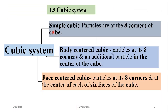In the cubic system, three types of unit cells exist: simple cubic, body centered cubic, and face centered cubic. In simple cubic, particles are at the eight corners. In body centered cubic, particles are at eight corners plus one particle at the center of the cube. In face centered cubic, particles are at eight corners plus the center of each of the six faces.